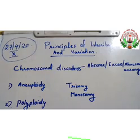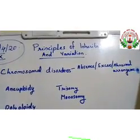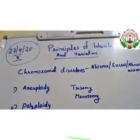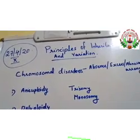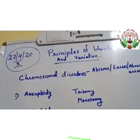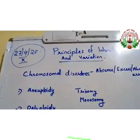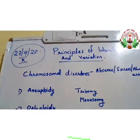Next, we are going to study about chromosomal disorders. Chromosomal disorders occur due to the absence, excess, or abnormal arrangement of chromosomes. One or two chromosomes may individually be absent, or a particular set of chromosomes may be absent. Chromosomal disorders can be of different types.